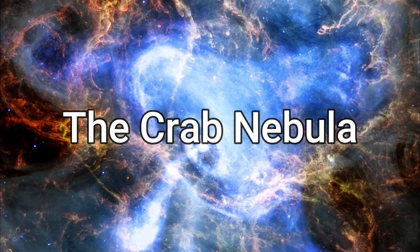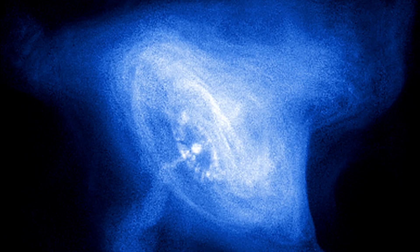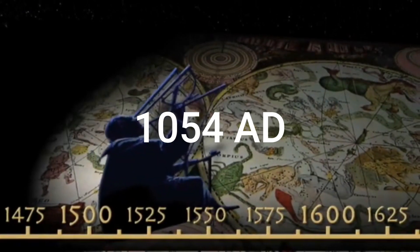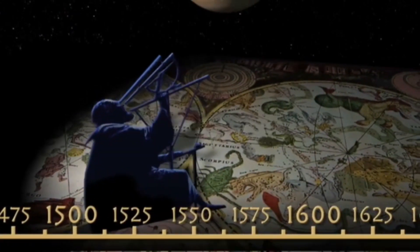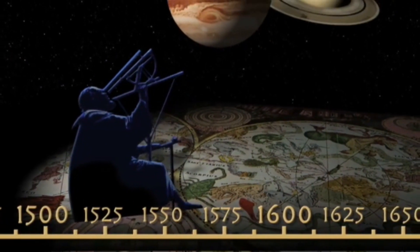The Crab Nebula, one of the most studied and iconic astronomical objects, is a supernova remnant and pulsar wind nebula in the constellation of Taurus. First observed in the year 1054 AD by Chinese astronomers, it has since become a cornerstone in the study of cosmic phenomena.